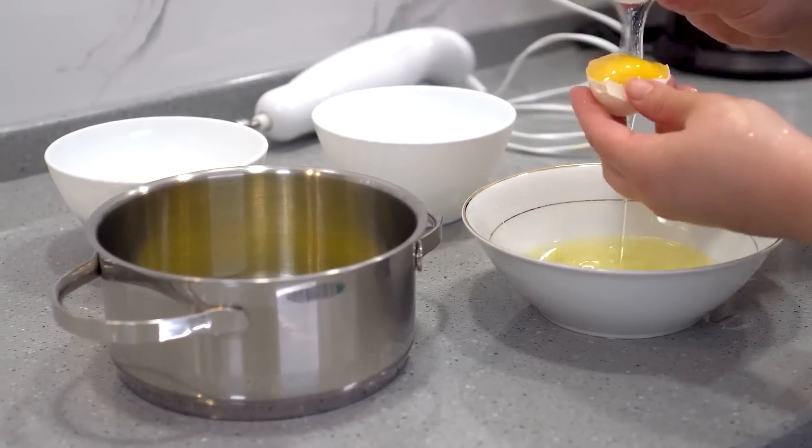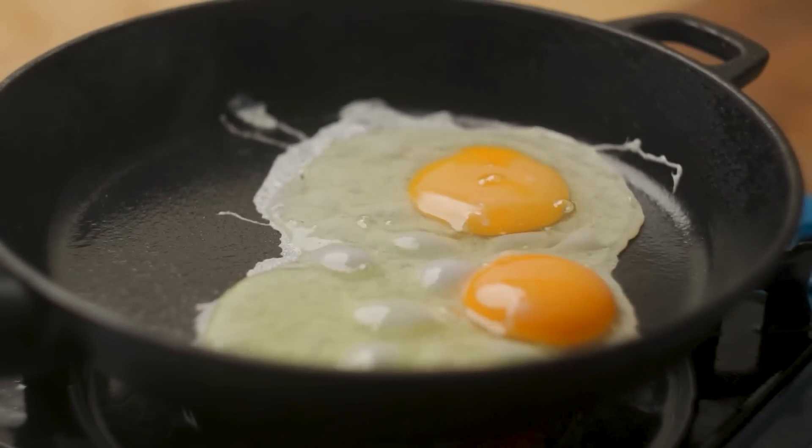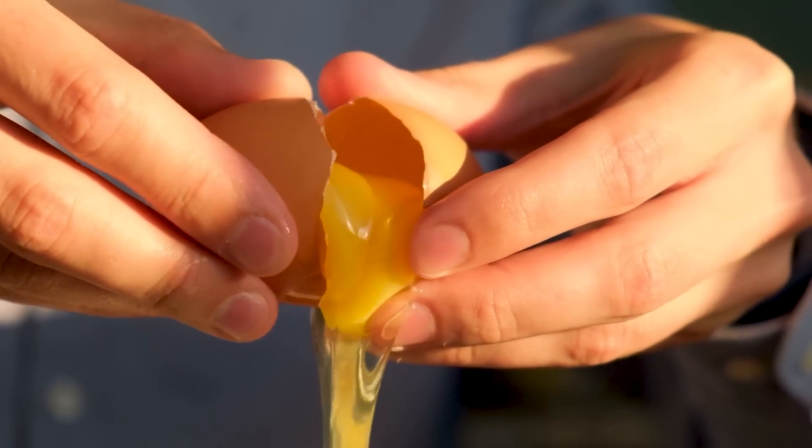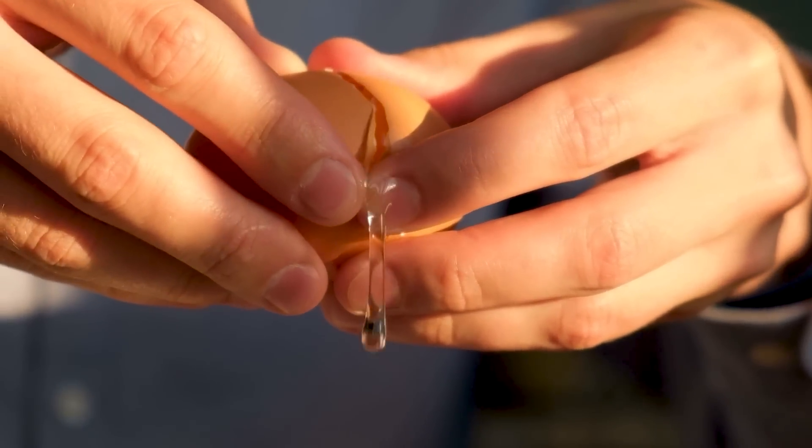For example, breaking an egg increases its entropy, since it becomes mixed and exposed to its surroundings.